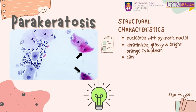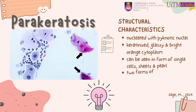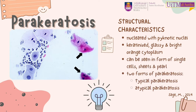The structural characteristics of parakeratosis include nucleated cells with pyknotic nuclei, and the cells are keratinized, glassy, with bright orange cytoplasm. Parakeratosis can be seen in the form of single cells, sheets, and plaques. There are two forms of parakeratosis: typical parakeratosis and atypical parakeratosis.